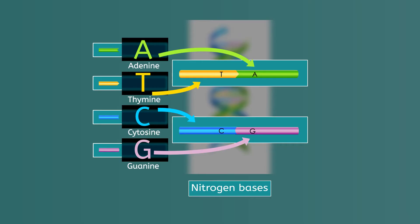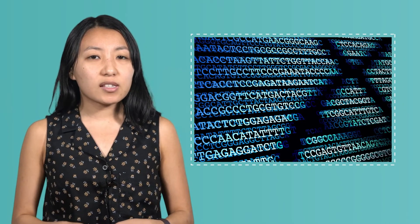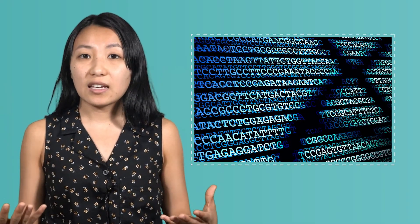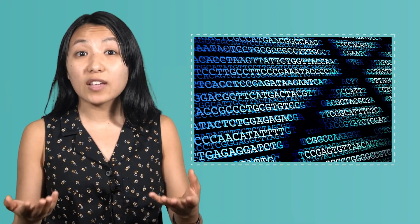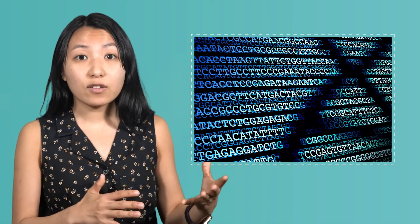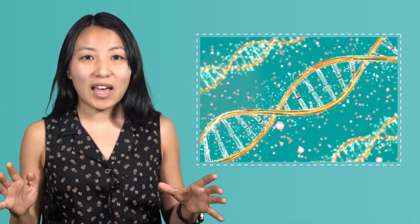The order of these nitrogen bases determines how a cell operates, what resources are built, and how many. You can think of these sequences of A, T, C, and G as the language of DNA — kind of like the order of letters written on a page has meaning, or how the order of ones and zeros, or binary code, is the language of computers. The genetic codes that make life possible are incredibly complex, so there can be billions of these nitrogen bases in just one cell.